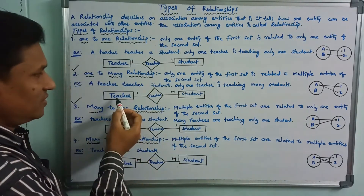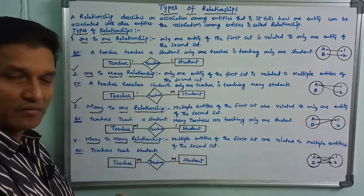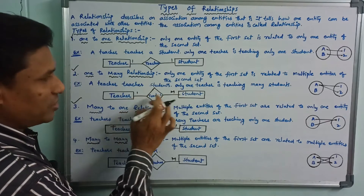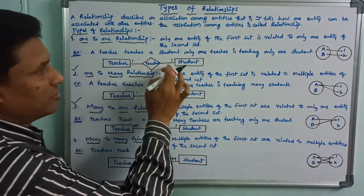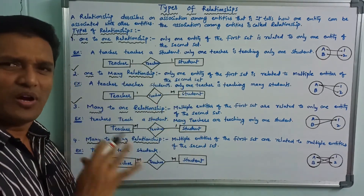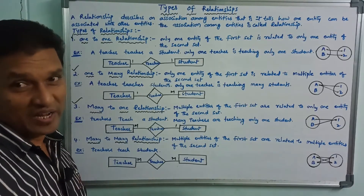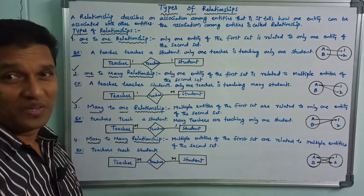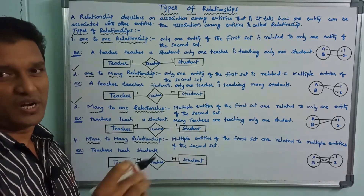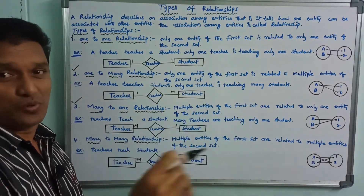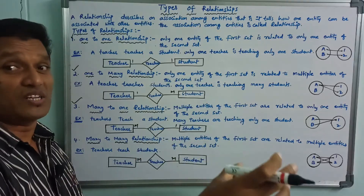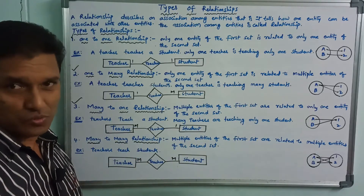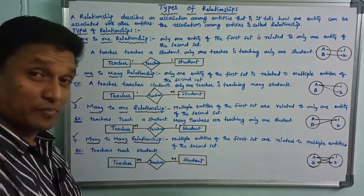Same example summarized: teacher teaches student. Many teachers to one student; one teacher to many students; one teacher to one student. You can apply the same example across all types. Many teachers, only one student; one teacher, many students; one teacher, one student. Next, the fourth one: many-to-many relationship.